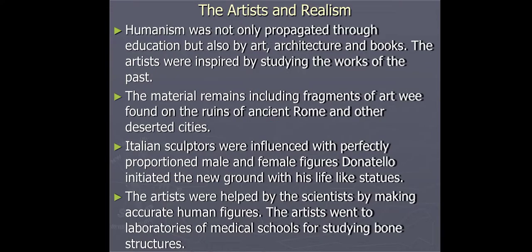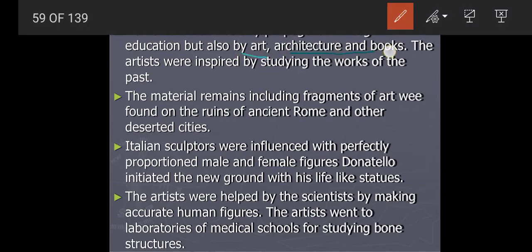Regarding artists and realism: as humanist painters deeply worked on the detail of every object to make it look real, it was very related to realism. Humanism was propagated not only through education, but also by art, architecture, and books. The artists were inspired by studying the works of the past — like Greek and Roman scholars. Material remains, including fragments of art found in the ruins of ancient Rome and other deserted cities, were used. Italian sculptors were influenced by the perfectly proportioned male and female figure.